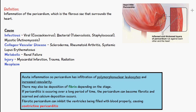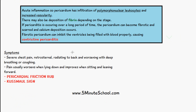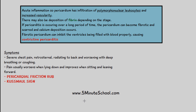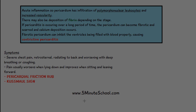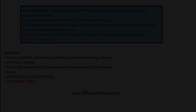Another sign of pericarditis is Kussmaul's sign, where there is a rise in jugular venous pressure on inspiration, or a failure in the fall of jugular venous pressure with inspiration. It is not normal for jugular venous pressure to rise during inspiration, but it is seen in pericarditis and indicates that the right ventricle is not being filled properly, especially in constrictive pericarditis.